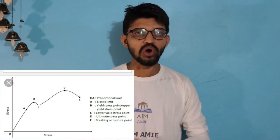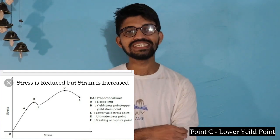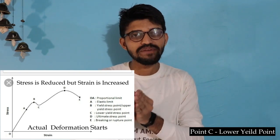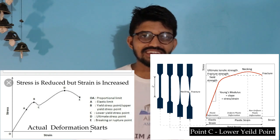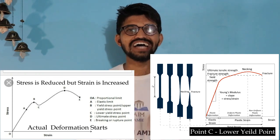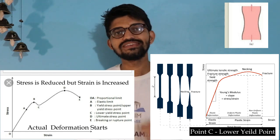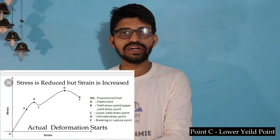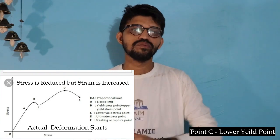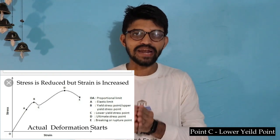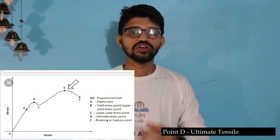Moving ahead to point C: here, the stress is considerably reduced but the strain increases. At point C, actual deformation starts — the material gets deformed and necking begins. Necking is the phenomenon that occurs in ductile material where the cross-section locally narrows, just like a neck. This point C is also termed the lower yield point, whereas point B was the upper yield point.